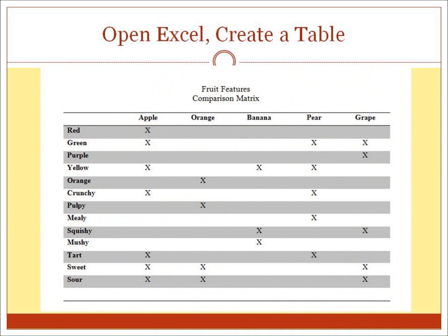Now let's begin to build our matrix. We'll start by opening a Word document and creating a table. You might also use Excel to create a similar table, but I prefer Word. Within this table, we will list our features in the first column and then add our fruits to the top row. Then we'll place an X in each fruit's row under the features that go with that particular fruit. And there we have our features comparison matrix.